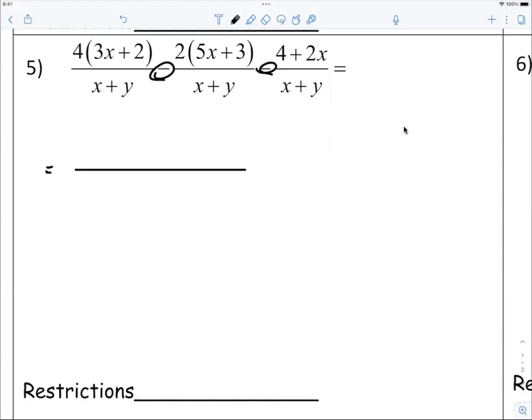All right, so we have a single denominator, which is x plus y. And like what we did earlier, x plus y cannot equal zero. So therefore, x cannot equal negative y. That would be our restrictions right here. Okay, x cannot equal negative y.